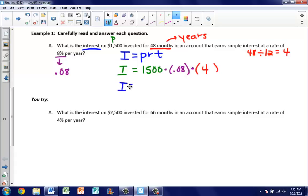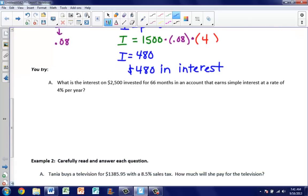When we multiply all three of these pieces together, we get 480. Let's make sure we're answering the question. What is the interest? The interest is $480. The only difference here is we had to convert that 48 months to years. Skip the You Try. You guys will work on that in class.